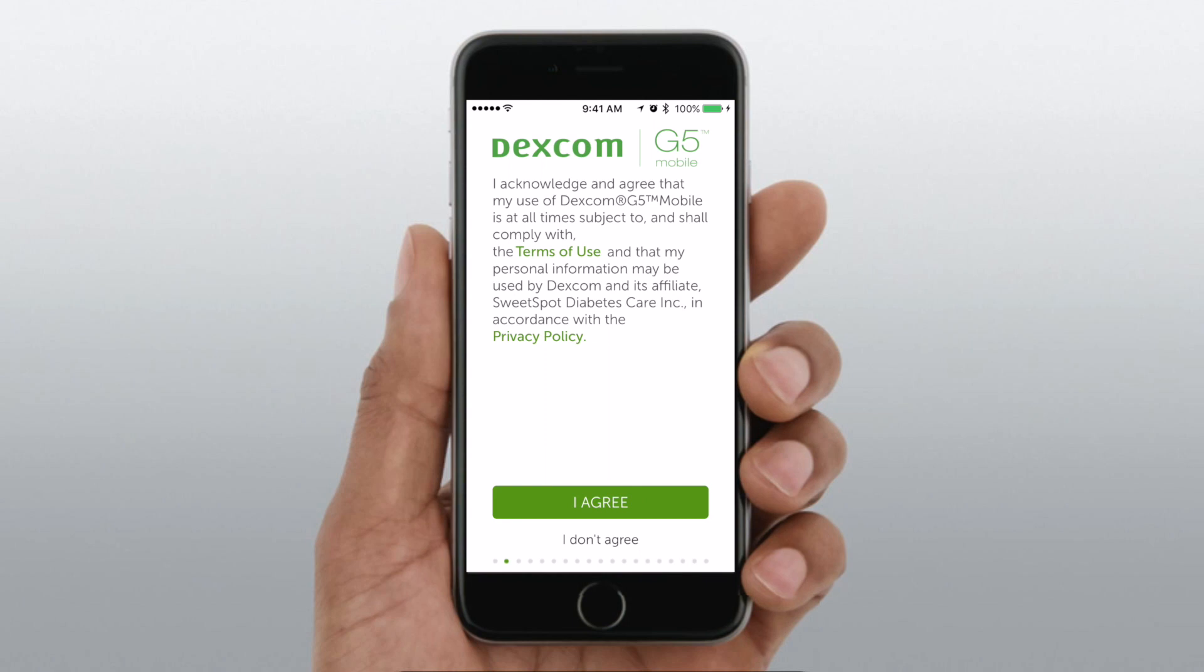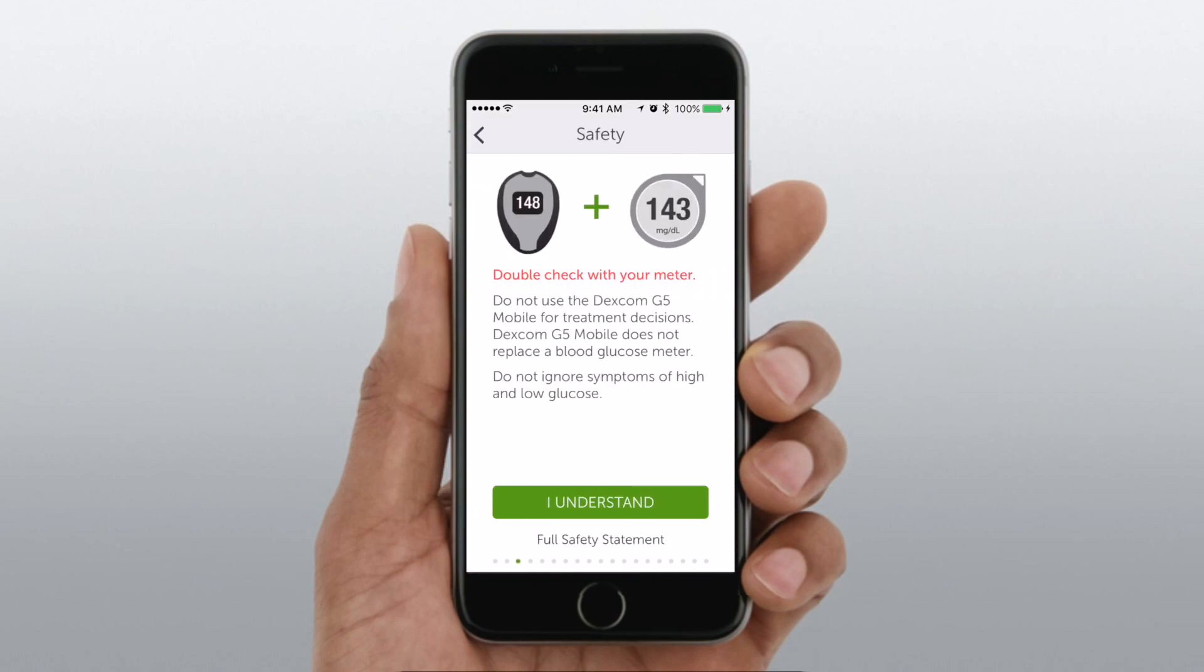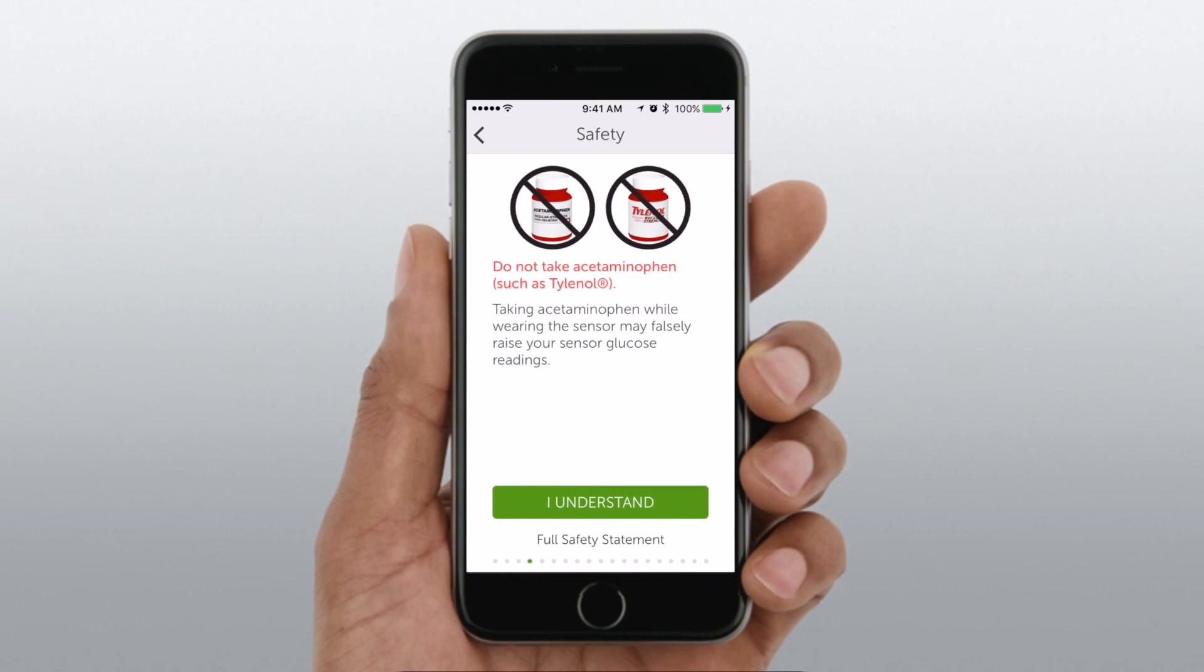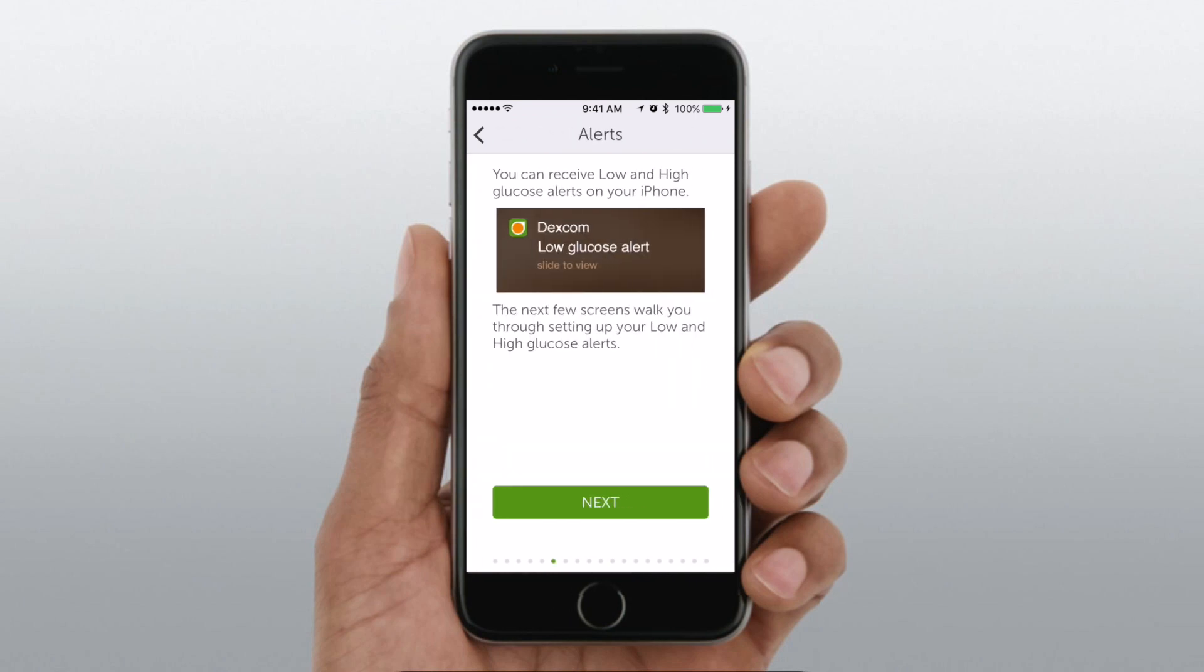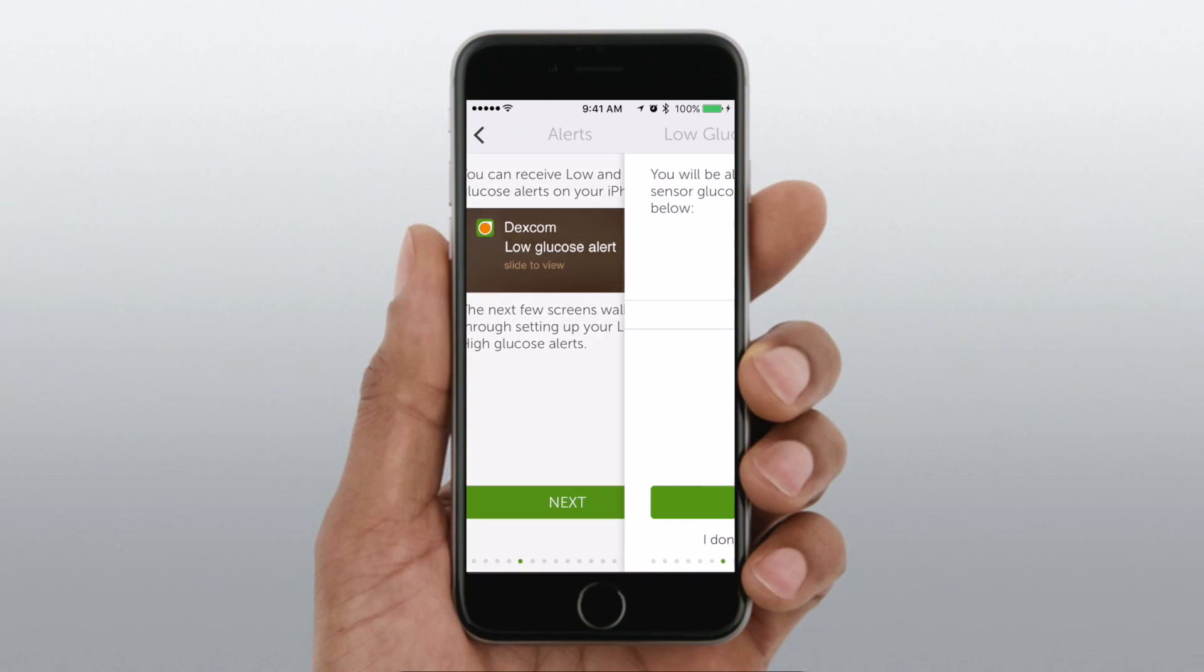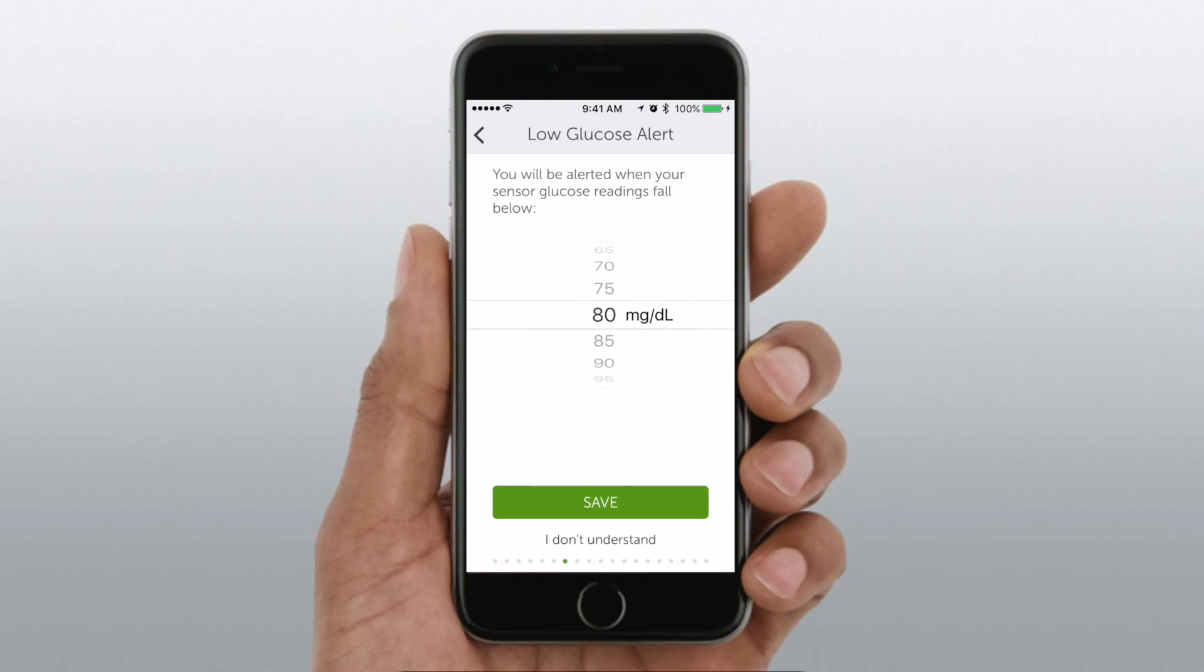Now when we're setting up this application, it has you walk through this little getting started guide. So first you accept the terms and services. You're going to be notified that you should always check with your meter before acting on any of those blood sugars. You should make sure you don't take anything like Tylenol that can artificially change your blood sugar. Stay away from MRIs. You know how to use alerts on your new phone instead of on the receiver.